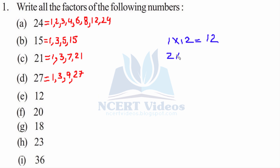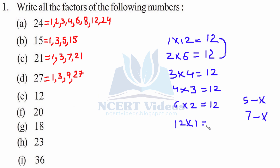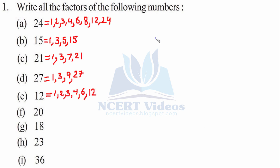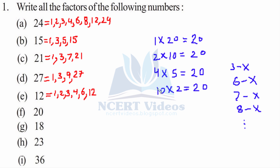For 12: 1 into 12 gives you 12. 2 into 6 gives you 12. 3 into 4 gives you 12. 4 into 3 is 12 again. 5 is not a factor. 6 into 2 is 12. 7 is not a factor. Now we will just reverse it. For 20: 1 into 20, 2 into 10, 4 into 5 is 20. 3 and 6 are not factors. Similarly, 7 and 8 are not. 10 into 2 is 20. 5 into 4 is 20 as well.